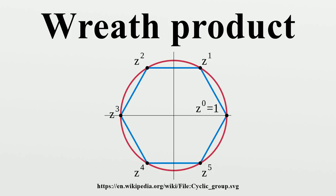Definition: Let A and H be groups and omega a set with H acting on it. Let K be the direct product of copies of A indexed by the set omega. The elements of K can be seen as arbitrary sequences of elements of A indexed by omega with component-wise multiplication.